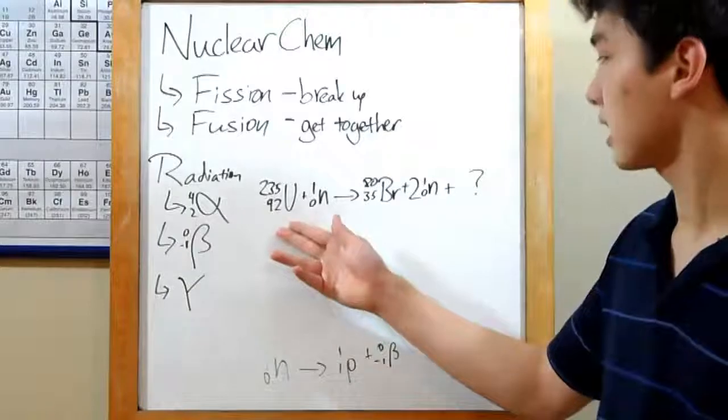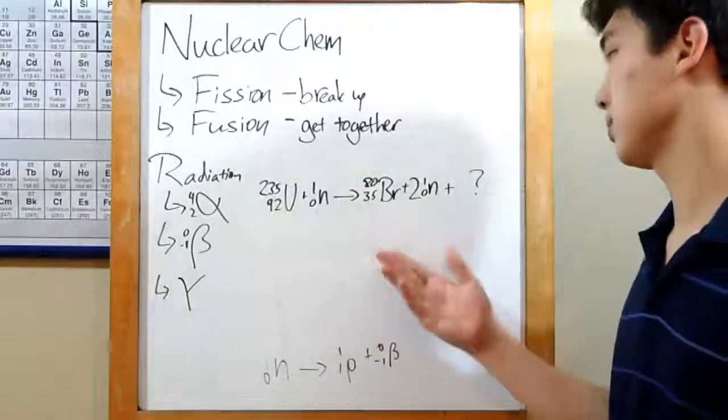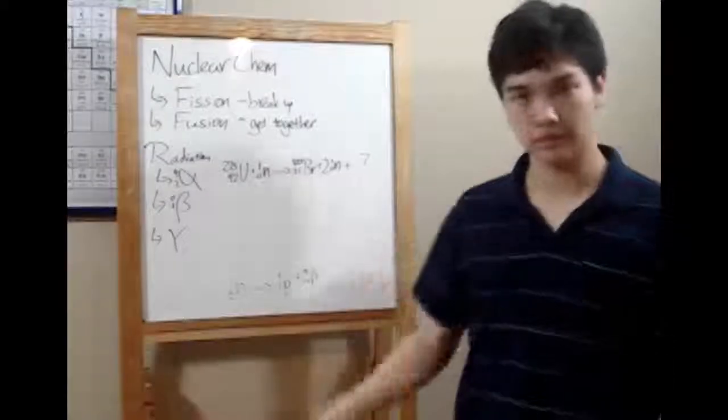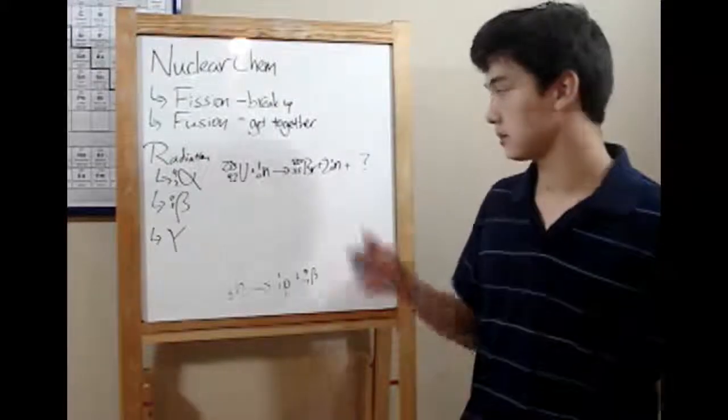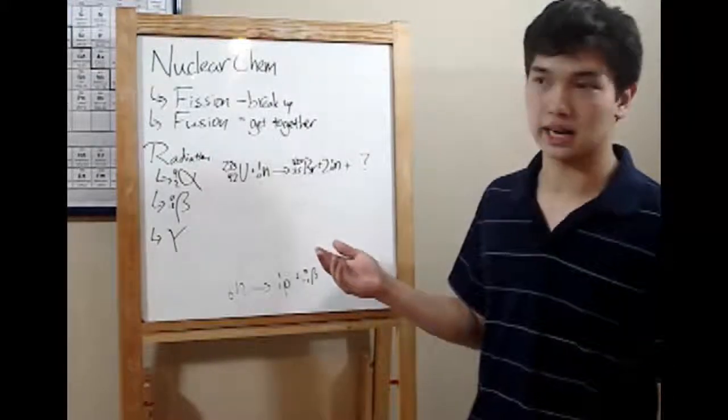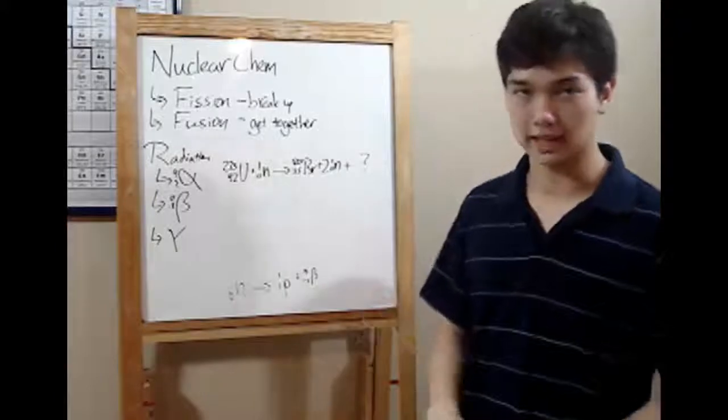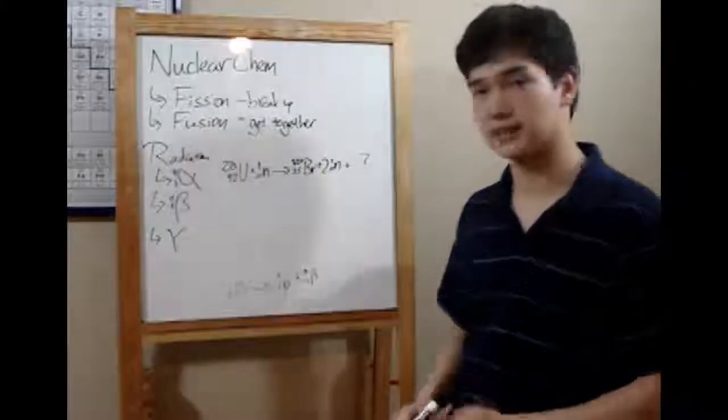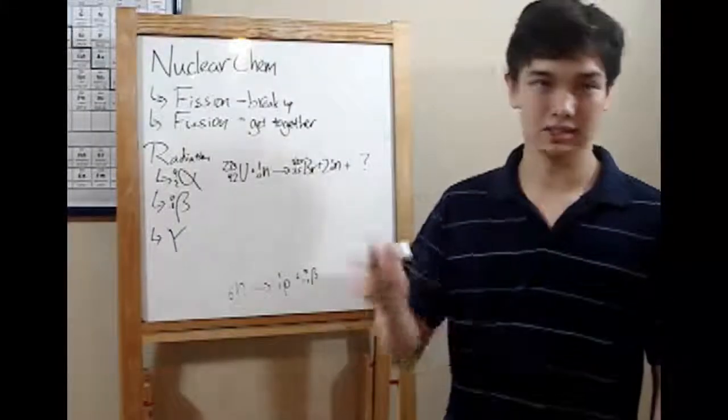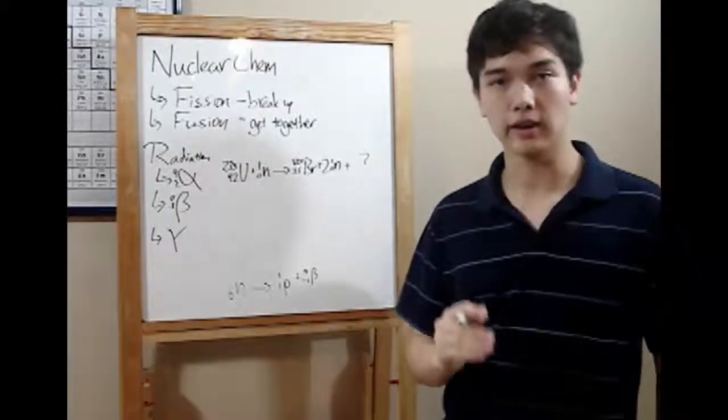Here we have uranium being hit by a neutron and breaking up into bromine, two neutrons, and something else. This is the kind of reaction you'll see in pretty much all nuclear reactors and high school chemistry textbooks. So let's get to breaking this down. In nuclear chemical equations, you just need to remember one thing. Make sure all your numbers add up.